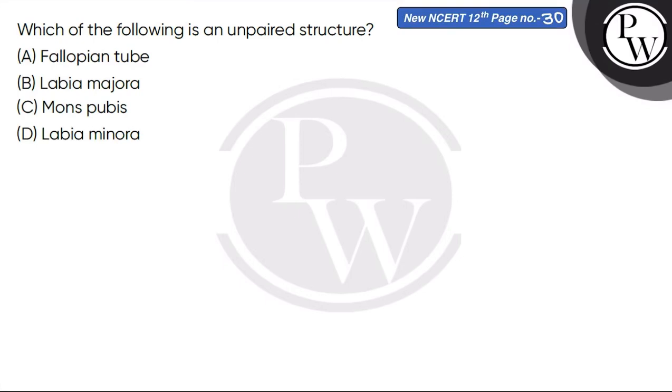Hello, let's read this question. The question says which of the following is an unpaired structure? So we have to find out the unpaired structure. First given is Fallopian tube, the Fallopian tubes.